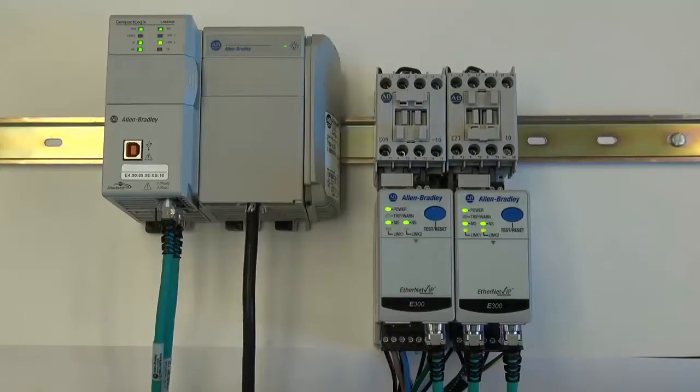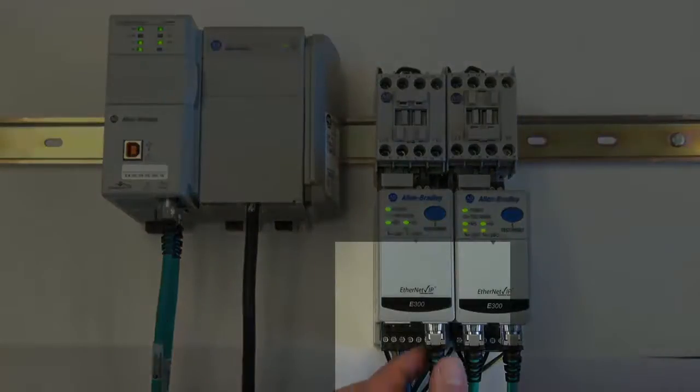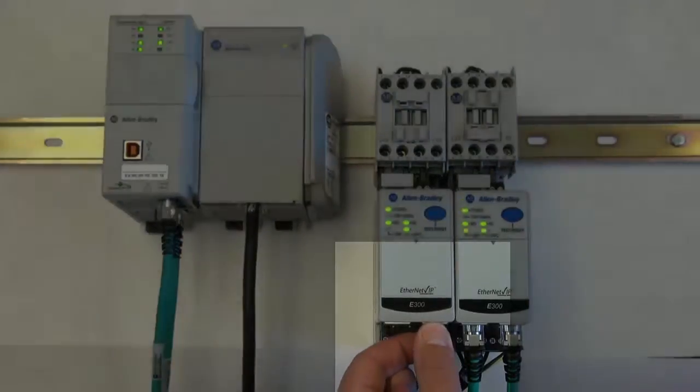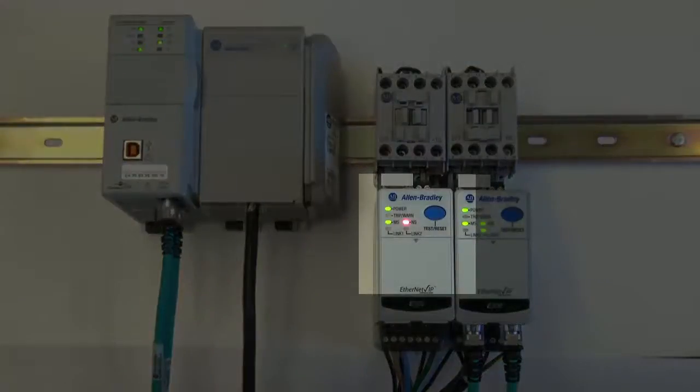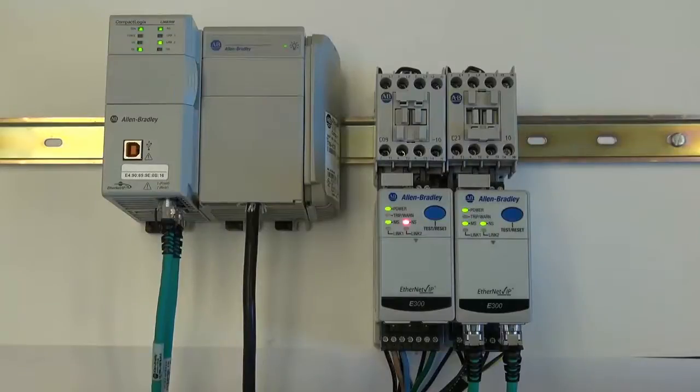If a second segment of the network is disrupted, the device will go into its fail-safe state. By default, the E300 electronic overload relay will open its control relays.